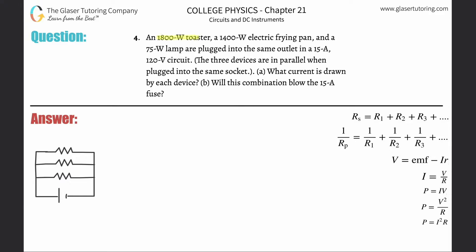Number four: an 1800-watt toaster, a 1400-watt electric frying pan, and a 75-watt lamp are plugged into the same outlet in a 15-amp, 120-volt circuit. They're connected in parallel, plugged in the same socket. What current is drawn by each device? Let's do a little highlighting.